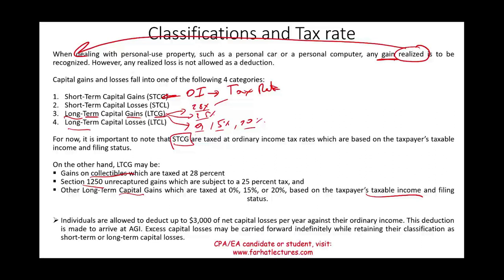Regarding losses: individuals are allowed to deduct up to $3,000 of net capital losses from investment assets against ordinary income to arrive at AGI. Any excess losses beyond $3,000 can be carried forward indefinitely. Importantly, excess capital losses carry forward while retaining their original classification as either short-term or long-term.